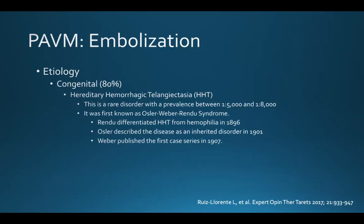HHT is a rare disorder with a prevalence between 1 in 5,000 and 1 in 8,000, and it was first known — perhaps better known — as Osler-Weber-Rendu syndrome. It's named after three people who had early roles in the knowledge base of this disease. Rendu differentiated HHT from hemophilia in 1896, Osler described the disease as an inherited disorder in 1901, and Weber published the first case series in 1907.